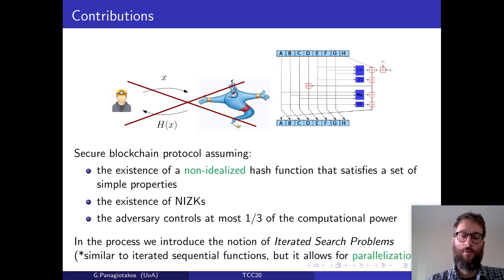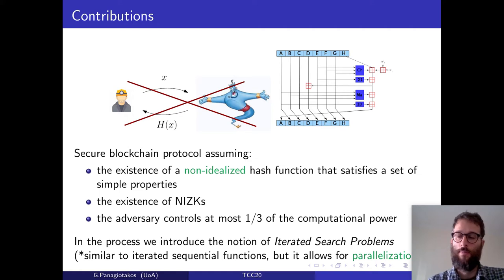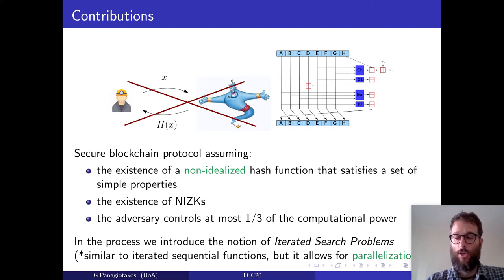Iterated search problems are a class of hard problems closely related to iterated sequential functions, with the difference being that at each iteration, parties have to solve a search problem and not compute a function. What is also interesting here is that our notion allows for parallelization, unlike sequential functions. This property is shown to be important for the design of proof-of-work based blockchain protocols.